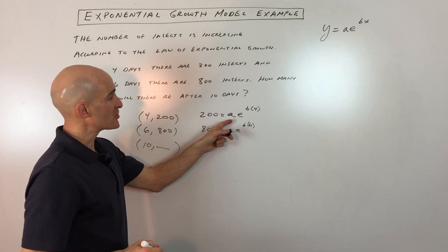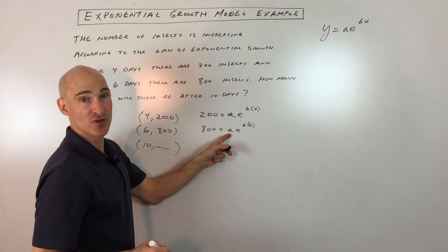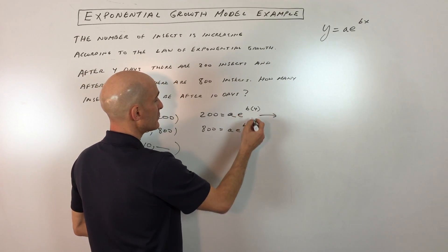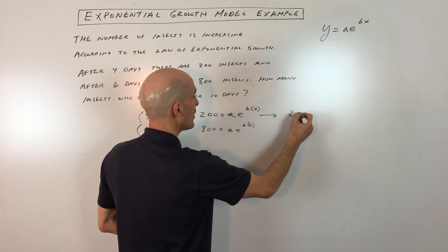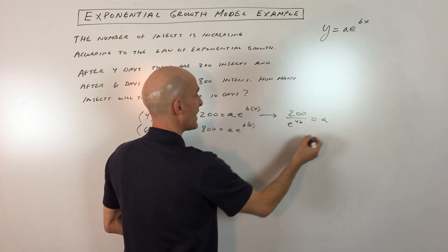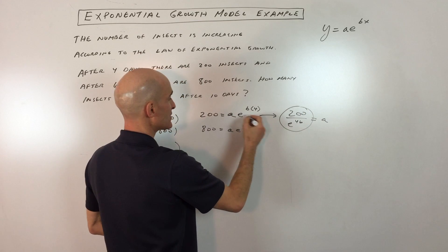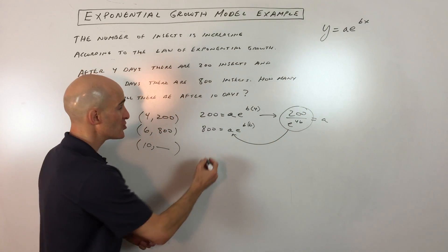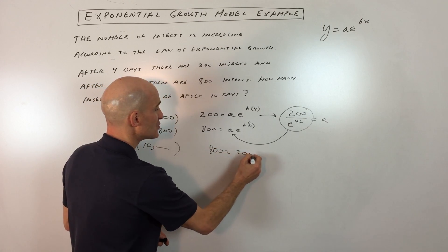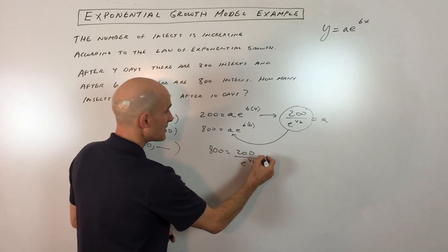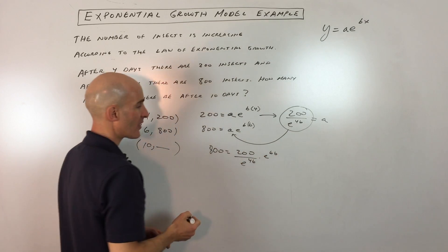We're going to solve for a and substitute it into the second equation. I'm going to divide by e to the 4b, so we've got 200 over e to the 4b equals a. We're going to take that quantity from this first equation and put it in for a in the second equation. That's just substitution. So we have 800 equals 200 over e to the 4b times e to the 6b.